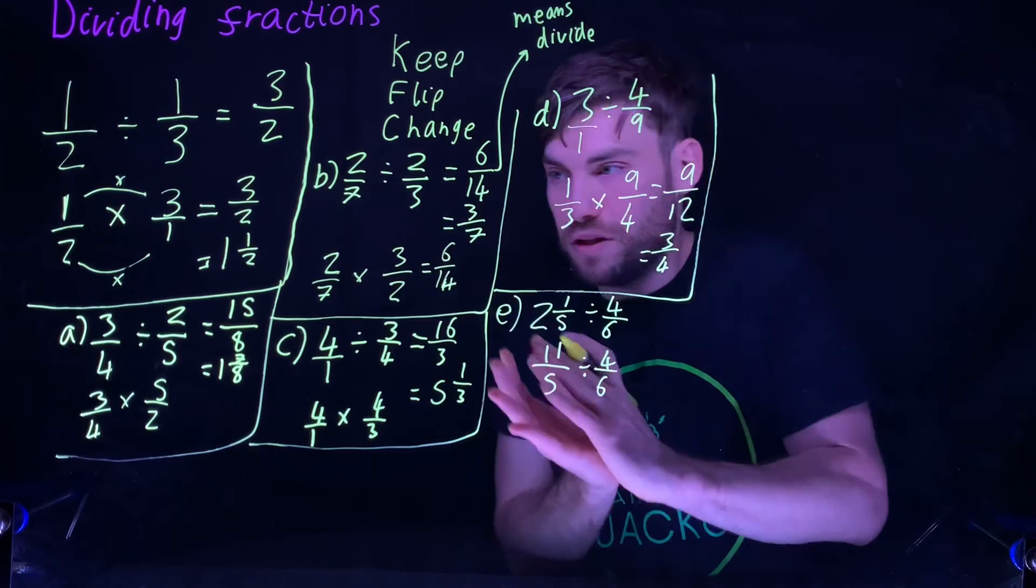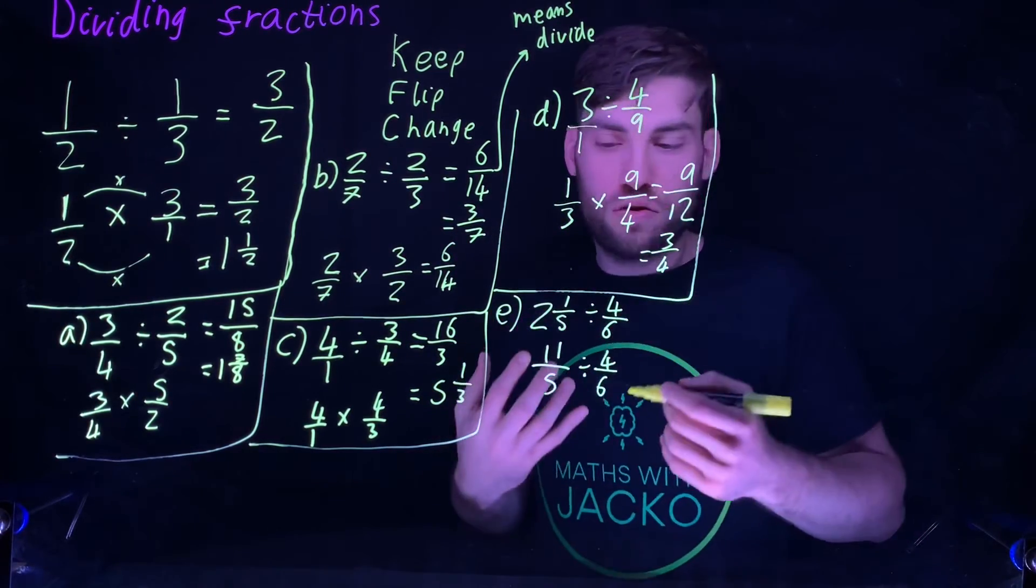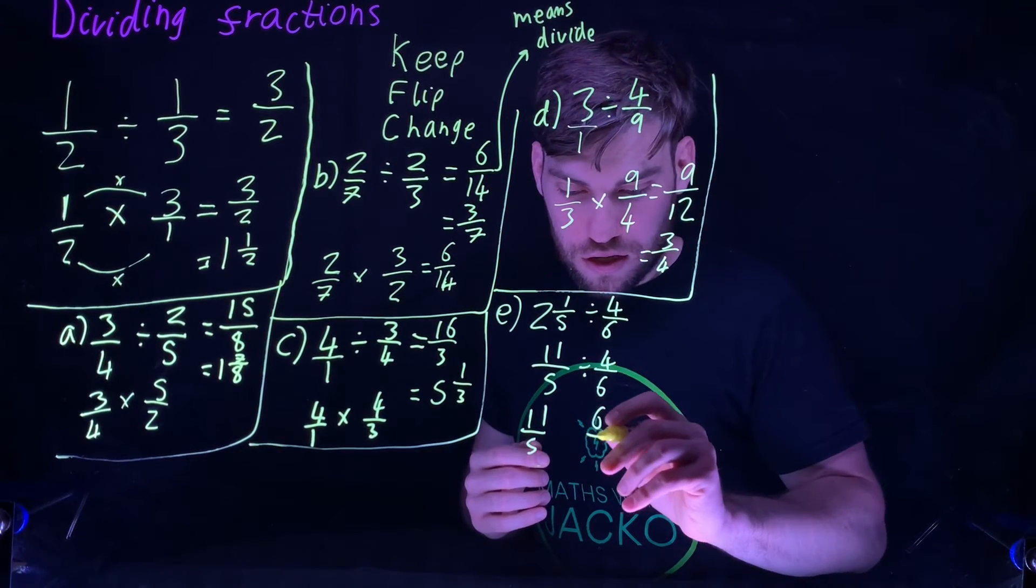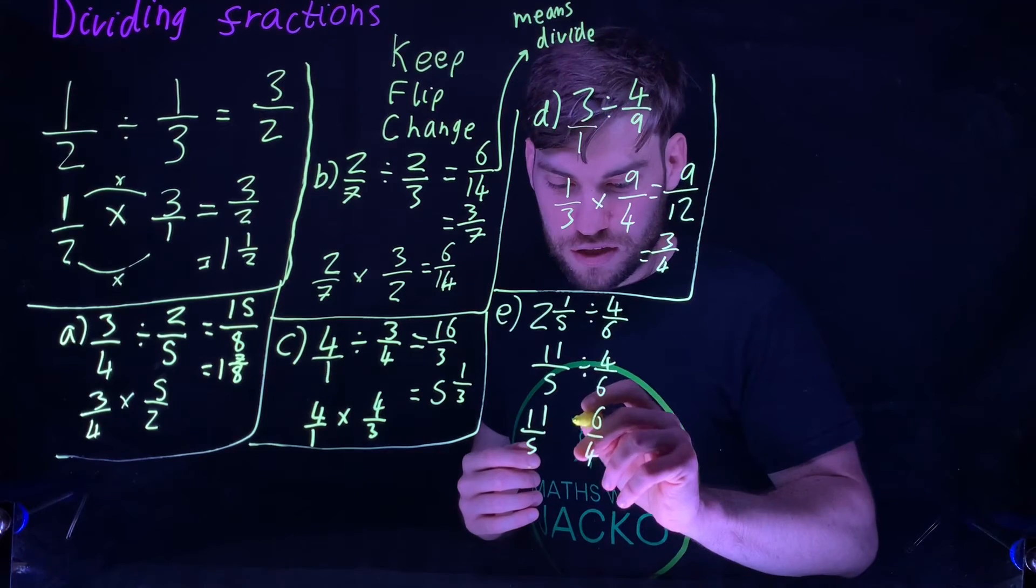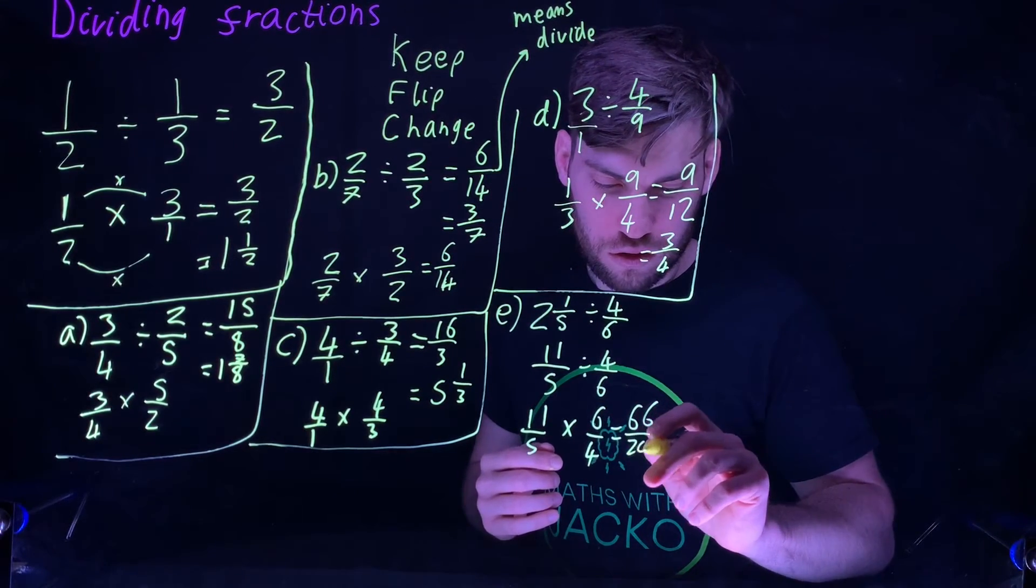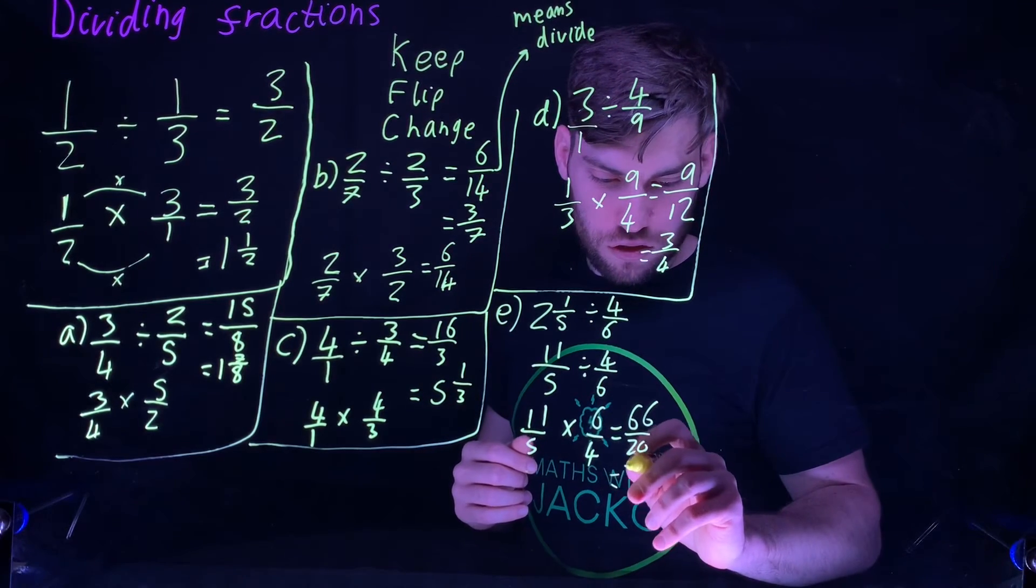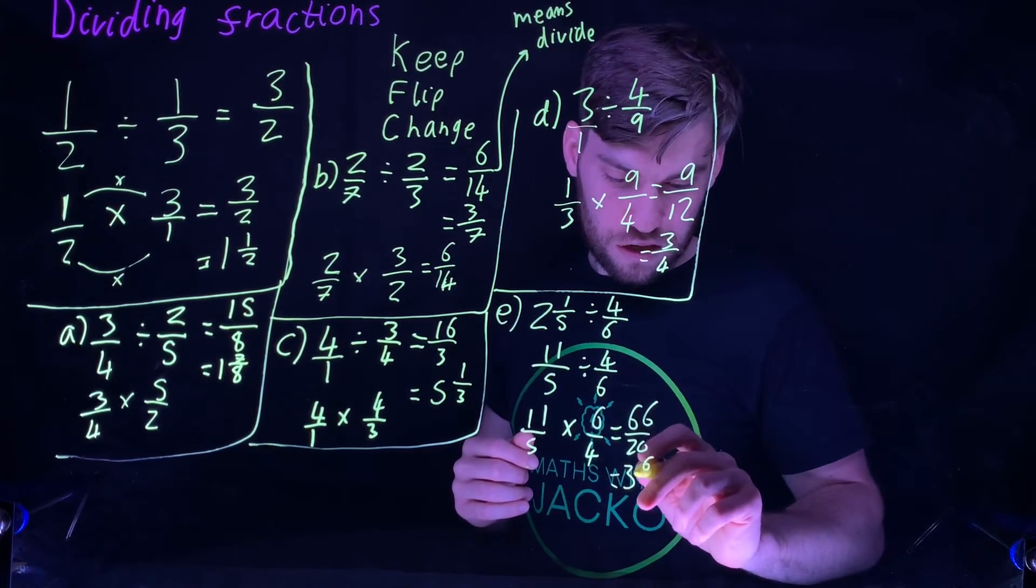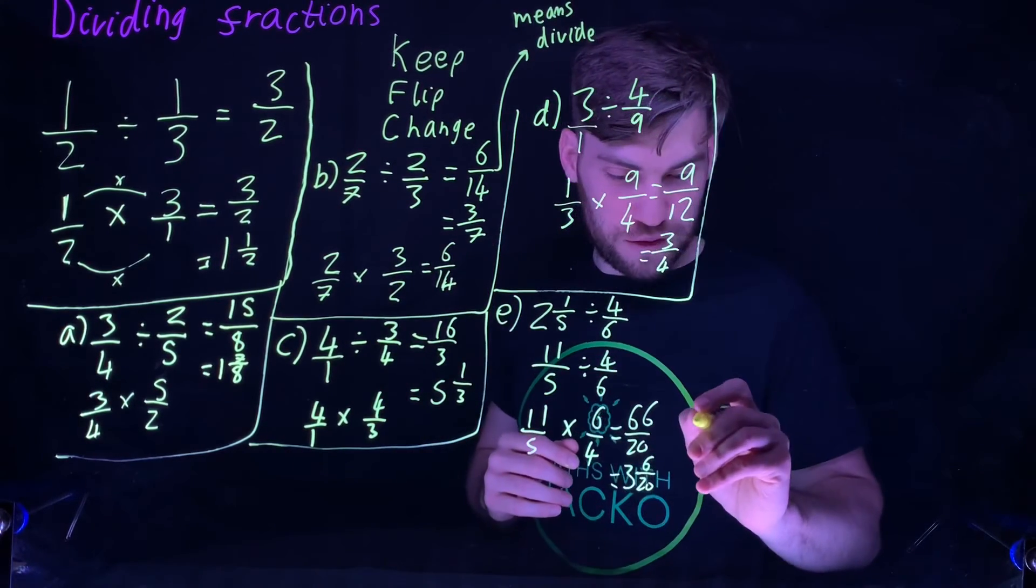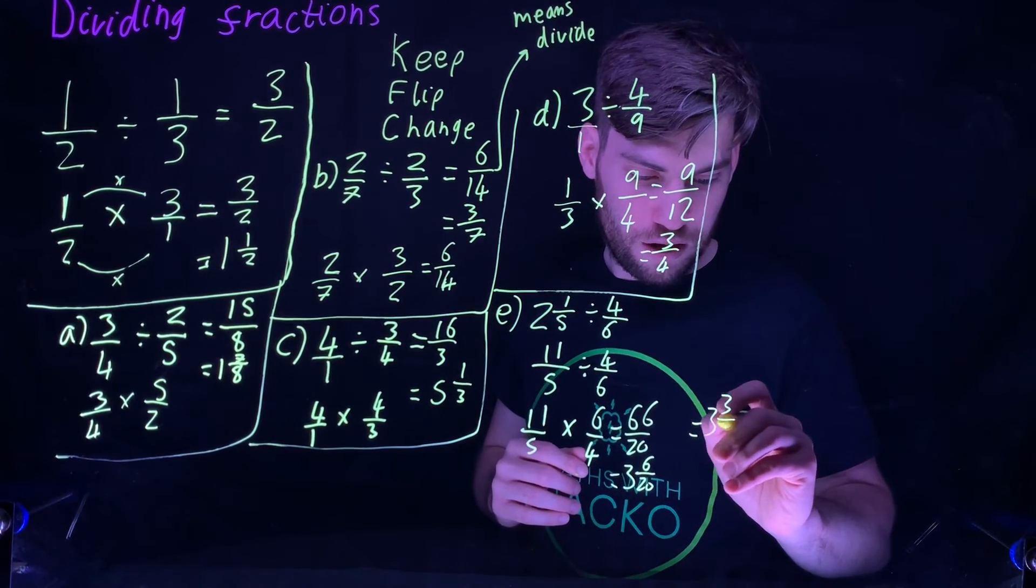Now you can do what you normally do. Eleven fifths divided by four sixths. Keep the first one, flip the second one to six over four, and change the divide to multiply. You get sixty-six over twenty, which as a mixed number is three and six over twenty, which then simplifies to three and three tenths.